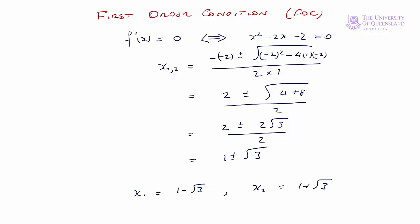We have two stationary points: 1 minus the square root of 3 and 1 plus the square root of 3. We want to classify those stationary points. We could use the second derivative rule, but in this case it might be easier to use the first derivative rule to find out whether each of these is a local maximum or local minimum. We'll do that using a sign diagram.